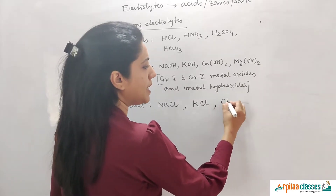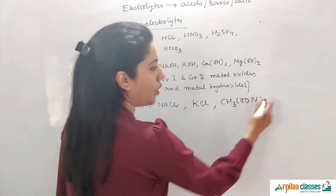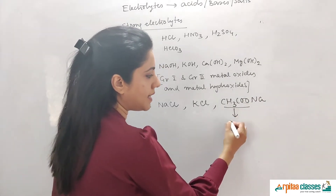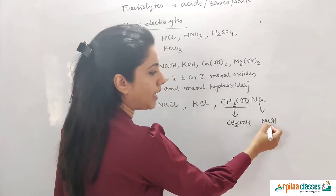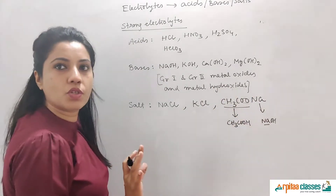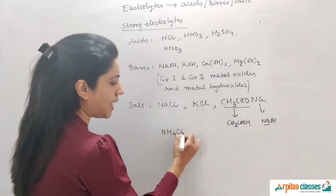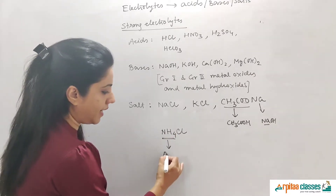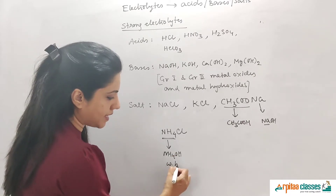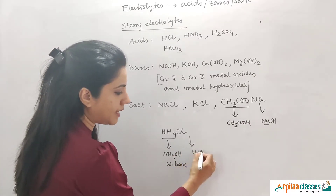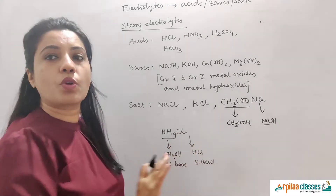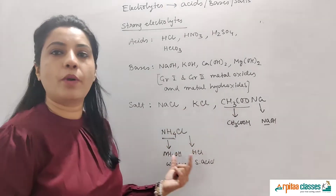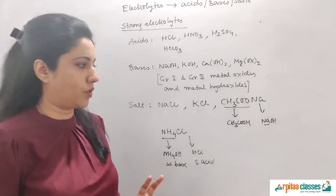NH4Cl is made up of weak base NH4OH and strong acid HCl. Since one component is strong, the electrolyte will be strong. Any salt whose both components are strong, or only one component is strong, becomes a strong electrolyte. So any salt where both components are weak is a weak electrolyte.